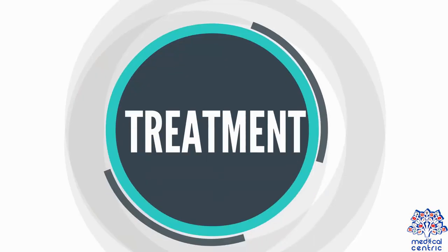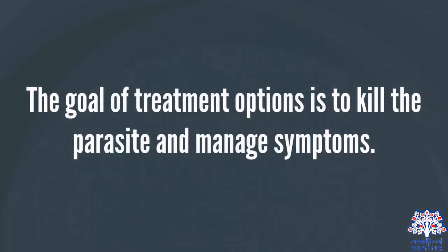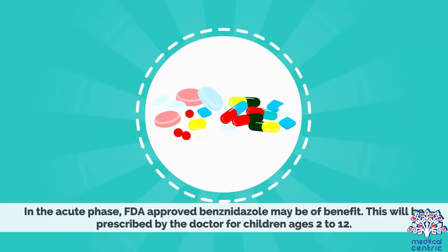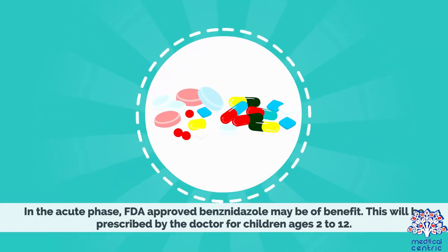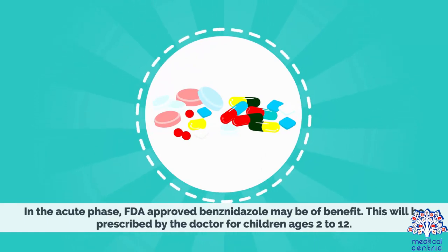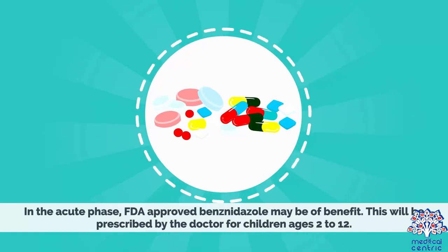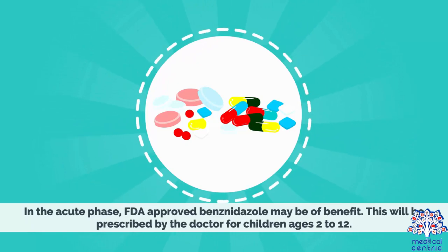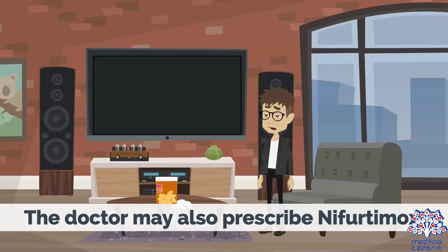The goal of treatment is to kill the parasite and manage symptoms. In the acute phase, FDA-approved benznidazole may be of benefit, prescribed by the doctor for children ages 2 to 12. The doctor may also prescribe nifurtimox.